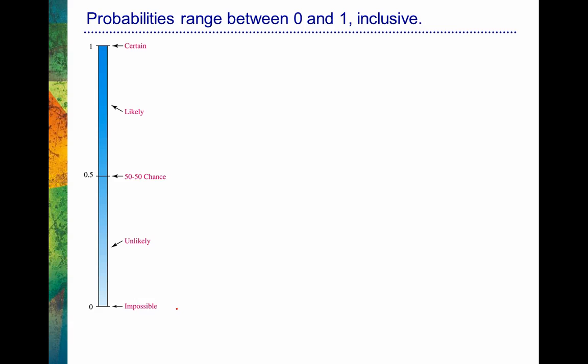Whenever we're speaking about probabilities, they range between 0 and 1, with those values 0 and 1 included. People often talk about probabilities in terms of percentages. So if the probability is 0.5, someone might say there's a 50% chance. I just want to make sure that when we compute probabilities, the value will always be between 0 and 1, even if we express it as a percentage.